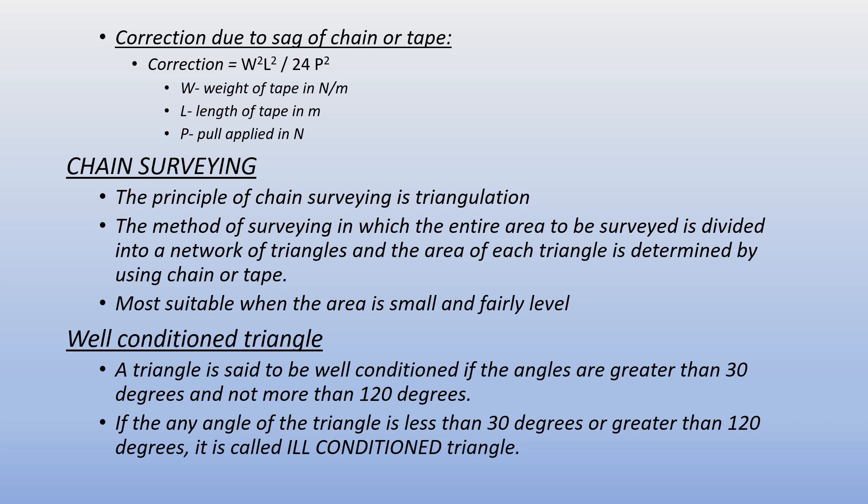The principle of chain surveying is triangulation. In triangulation, we divide the entire area to be surveyed into a network of triangles. The area of each triangle is determined by using a chain or tape. This method is more suitable when the area is small and fairly level, using well-conditioned triangles.